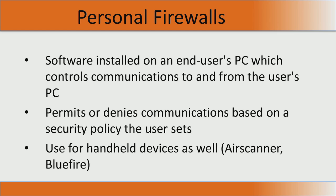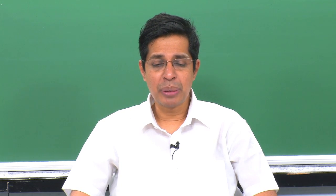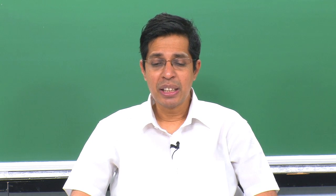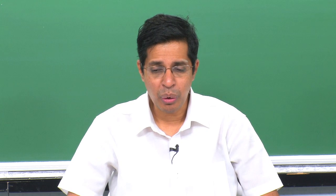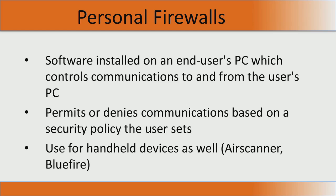Having covered anti-virus, anti-spyware, and security bundles, we now talk about how to protect the PC from the internet. Every PC can be equipped with a personal firewall, which will permit or deny communication based on a security policy you set on the system. These personal firewalls are extremely useful specifically for handheld devices as well — you can look up Air Scanner and Blue Fire, which are personal firewalls for mobile phones.